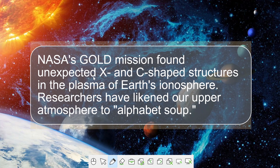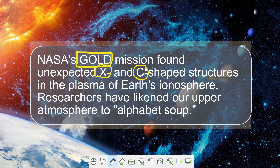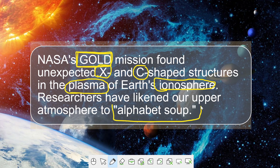NASA's mission, known as the Gold Mission — you have to take a look at it from a prelims perspective — the mission's name is GOLD. They have found an X-shape and along with another shape, which is a C-shape. This structure was found in the ionosphere — Earth's ionosphere, which contains active plasma molecules. I can see a term here in inverted commas: 'alphabet soup.'